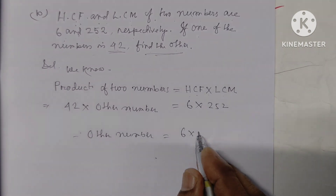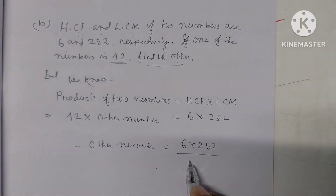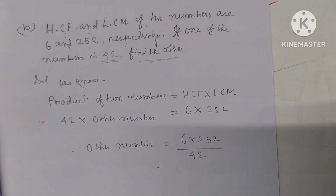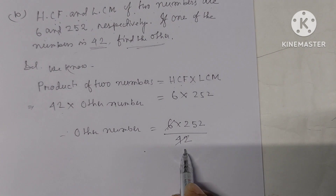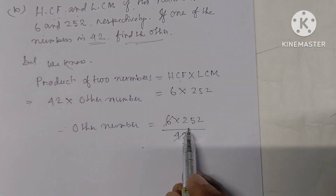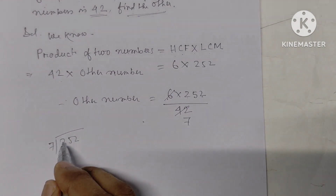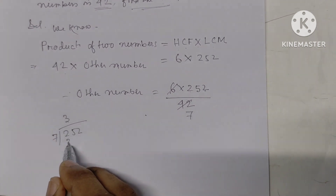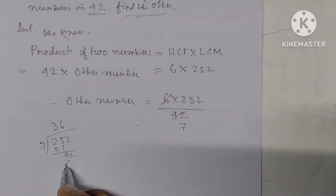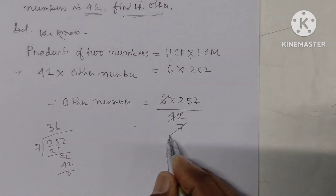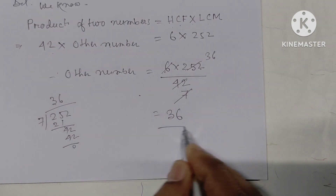We use the formula: product of two numbers equals HCF multiplied by LCM. So the other number equals 6 into 252 divided by 42. That gives us 36. The answer is 36.